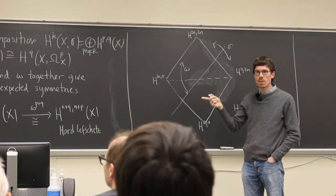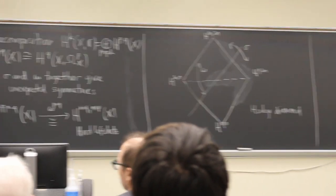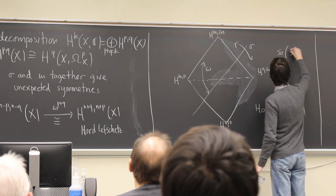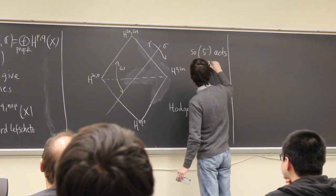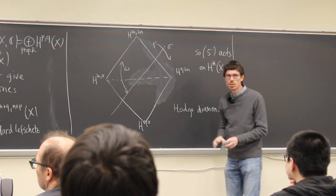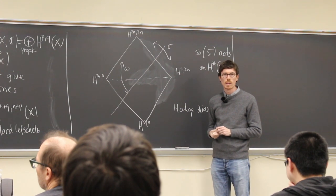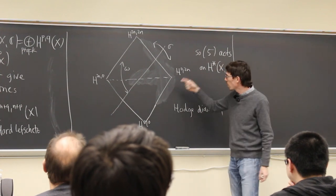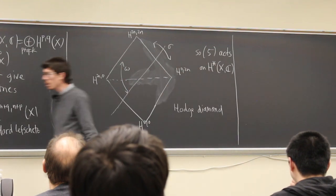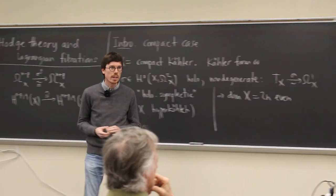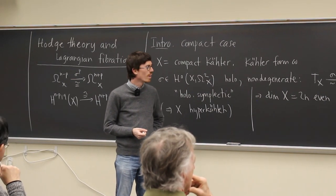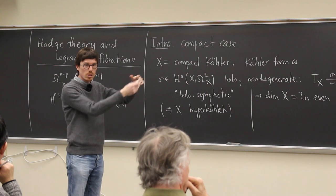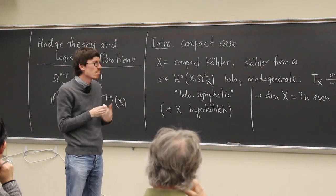So this Lie algebra SO5 actually acts on the total cohomology of X, and this decomposition into H^{p,q}s is actually just a decomposition into weight spaces. SO5 has rank 2, so it has a decomposition with bi-grading, and the Hodge decomposition is actually that decomposition. Usually on usual manifolds you just have one kind of symmetry — the symplectic form gives you an extra symmetry, and you get some somewhat unexpected things.